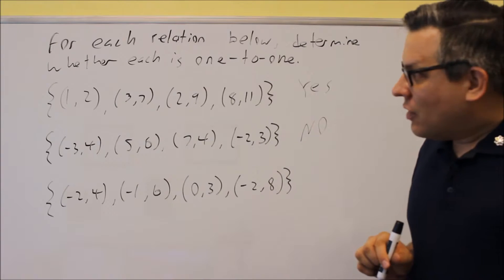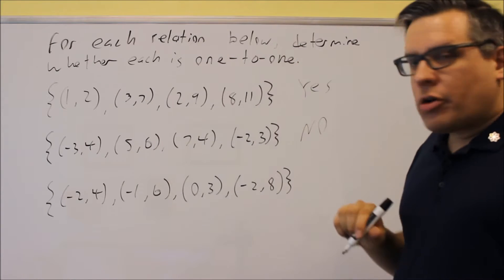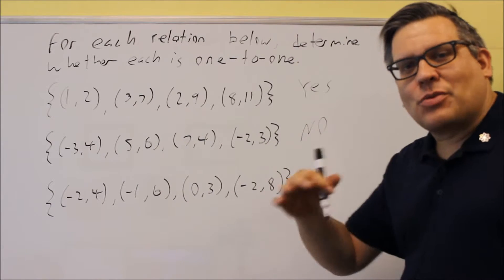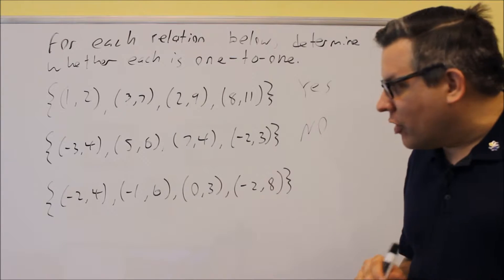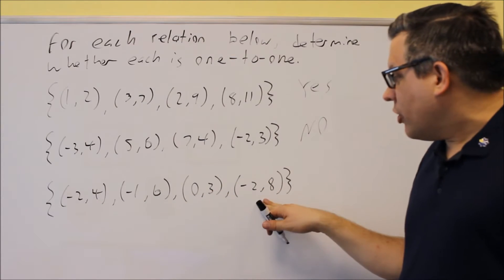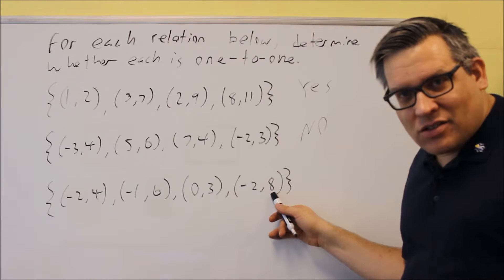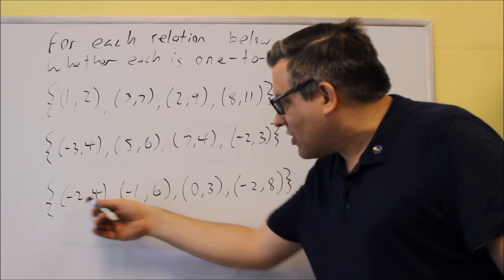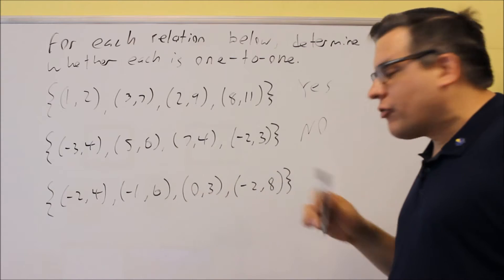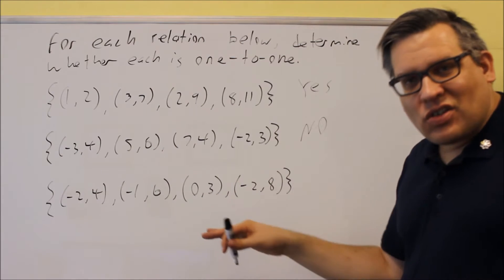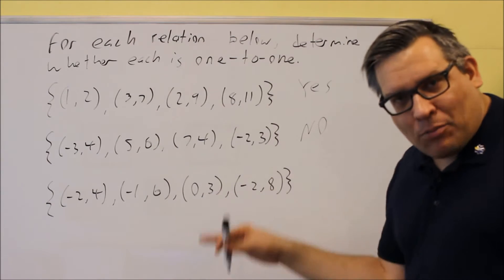Let's look at this one. Now, in order to be 1 to 1, it has to be a function to start off with. This one right here, we notice that negative 2 goes to 4 and negative 2 goes to 8. So therefore, we have the same x value going to two different y values. Since this is not a function, it can't be 1 to 1 either.